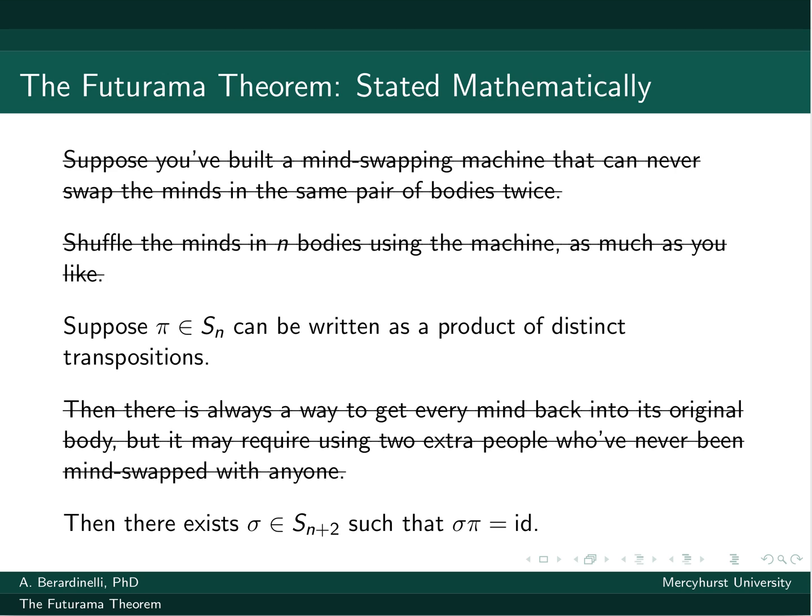And it says if we do π first, the shuffle first, then we do σ. Remember that the multiplication of permutations is right to left. So the π from the first line is the shuffling of the minds. The σ in the second line is the fixing it, fixing the shuffle, bringing it back.